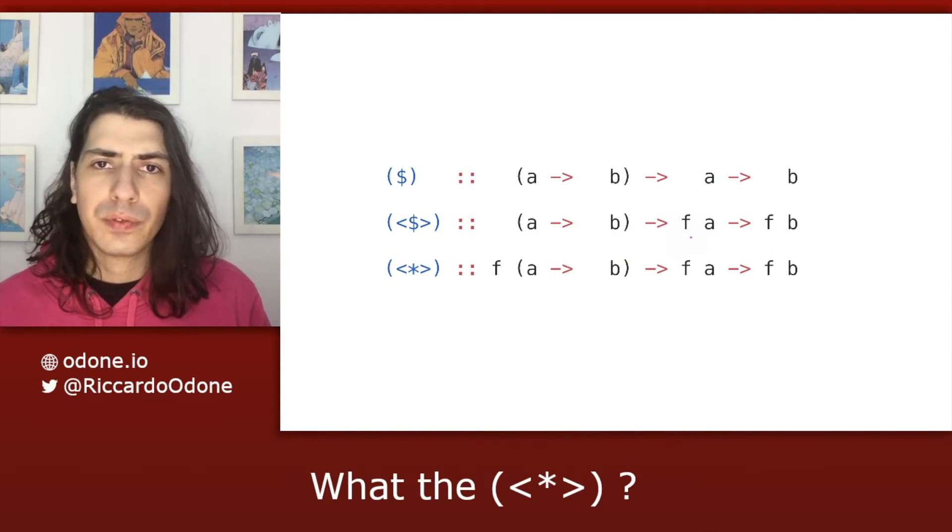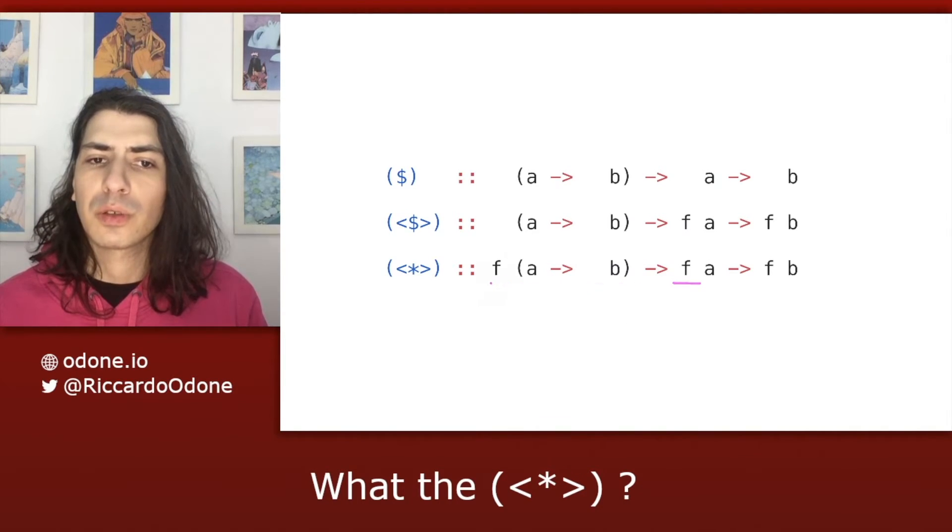In the case of applicative functors sequential application, we have the same situation as in fmap on this side, but we have another discriminator here on the left, which means that the way the value of type a is applied to the step function depends not only on one discriminator, but on two discriminators.